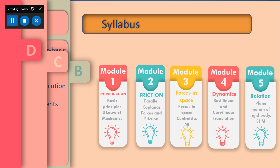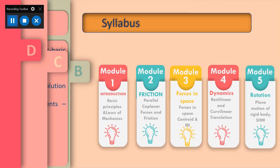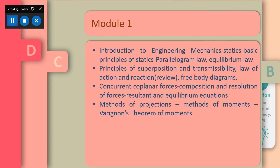Module 5 mainly deals with the rotational motion of bodies, rotation on a plane, simple harmonic motion, and vibration. Don't get confused by these names — we will discuss everything in detail in the upcoming modules. Module 1 is the introductory part of engineering mechanics, where we will first study statics, dynamics, and basic principles including the parallelogram law, triangle law, equilibrium law, law of superposition, transmissibility, law of action and reaction, and free body diagrams.